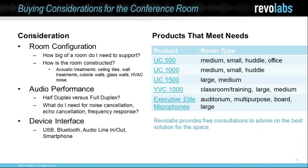We have several products. Right now I'm speaking on a UC500, which is a USB-type device that plugs into a PC — great for medium or small huddle room and office-type spaces. Our UC platform is really taking off in the huddle space. The UC1000 and UC1500 use USB functionality but also combine it with a SIP phone, so it can be a conference phone, a USB device, or both combined. Our YVC1000 is a Yamaha product for USB-type applications. And our executive elite microphones are our wireless microphones that go into multi-purpose rooms, big boardrooms, auditoriums, and that type of space.